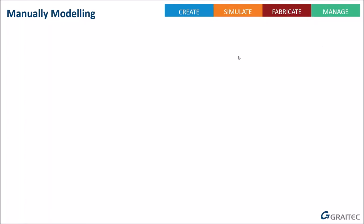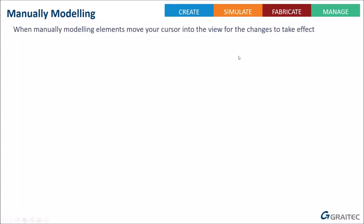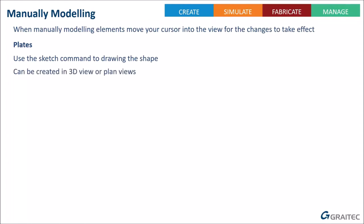For manually modeling elements, an important tip: when you change a value in the properties panel - for example changing the number of anchors to 10 - you must move your cursor from the properties window into the actual view for the change to take effect. For modeling plates, select the plate command, pick your working plane (such as the bottom flange of a beam), then sketch any shape using the standard sketch command. Plates can be created in 3D views, plan views, and in Revit 2021 also in sections and elevations.